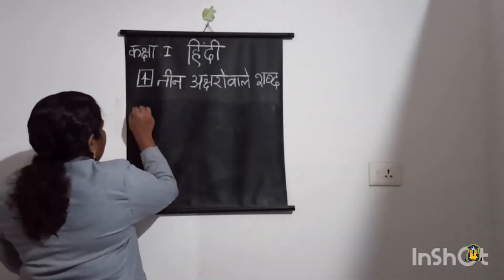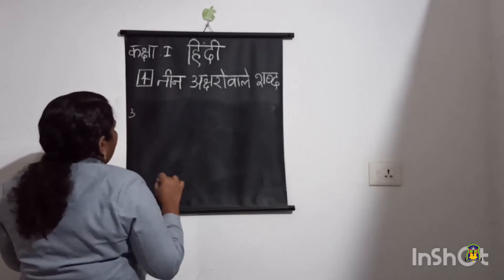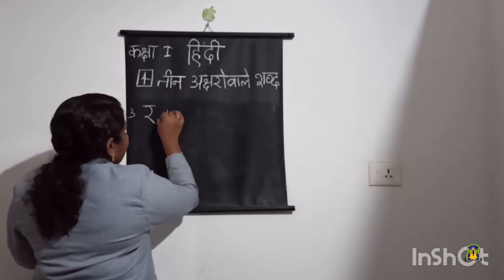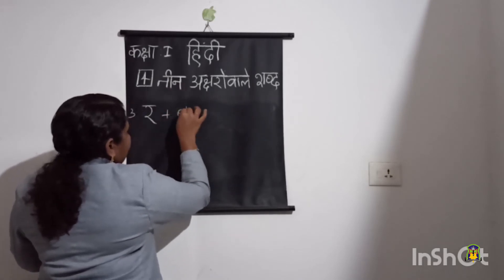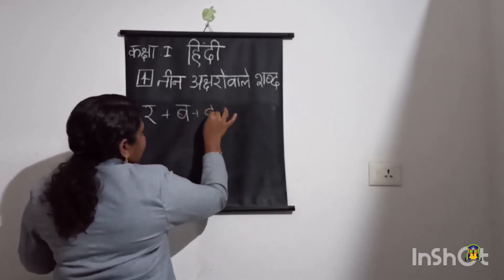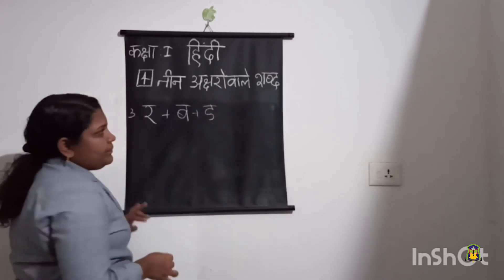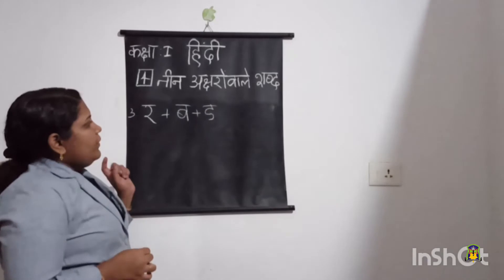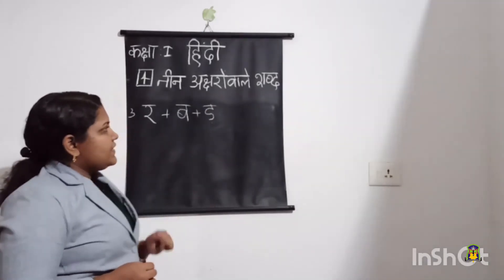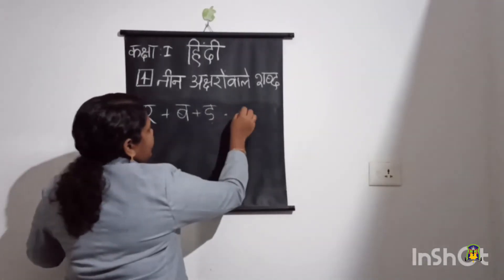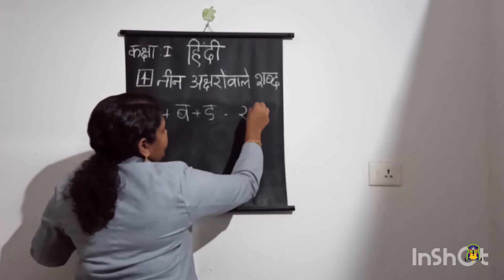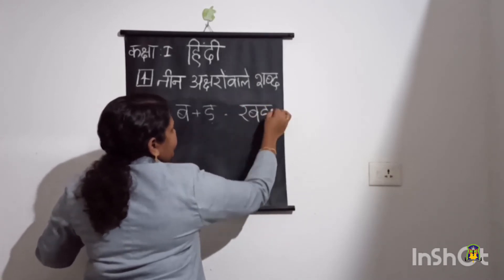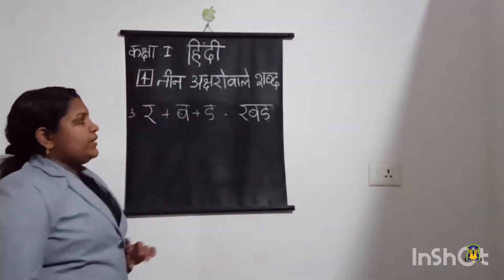Next, I am going to write the third three letter word. I am going to write the letter Ra, then Dha, then the third one Dha. Next I am going to join these three letters together. This is the three letter word.